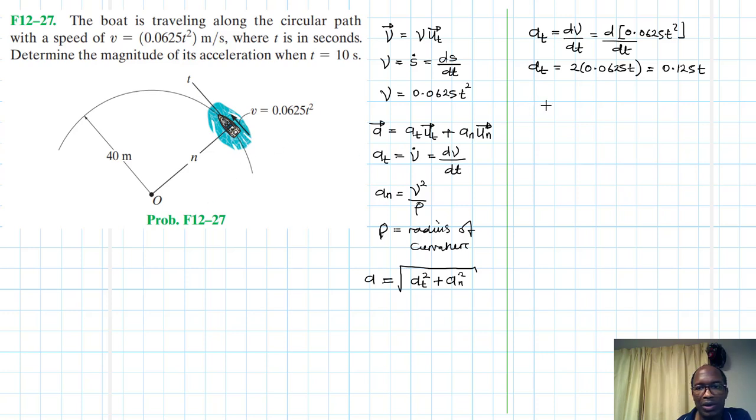Let's find this centripetal acceleration an. So this one we said is equal to velocity squared divided by rho. Where velocity itself, we already know it is 0.0625 t squared. And rho, the radius of curvature, is equal to 40 meters. So if we are to plug in those values, then we will say 0.0625 t squared, we are squaring this, then divided by 40.